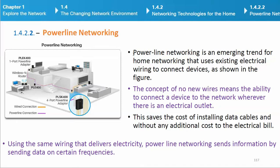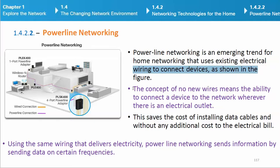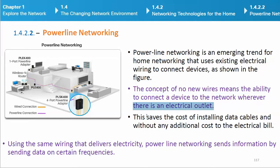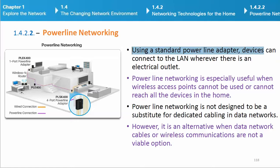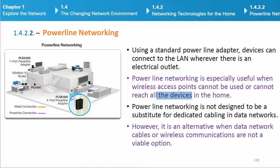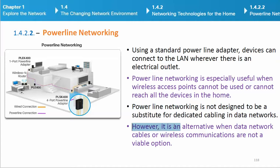Powerline networking is an emerging trend for home networking that uses existing electrical wiring to connect devices. The concept of 'no new wires' means the ability to connect a device to the network wherever there is an electrical outlet. This saves the cost of installing data cables without any additional cost to the electrical bill. Powerline networking sends information by sending data on certain frequencies using the same wiring that delivers electricity. Using a standard Powerline adapter, devices can connect to the LAN wherever there is an electrical outlet. Powerline networking is especially useful when wireless access points cannot reach all the devices in the home, though it is not designed to be a substitute for dedicated cabling — rather, it is an alternative when data network cables or wireless communications are not a viable option.